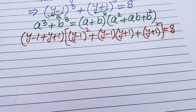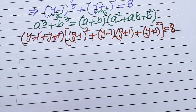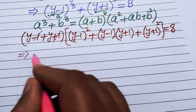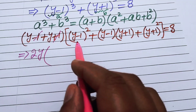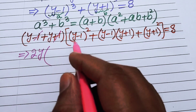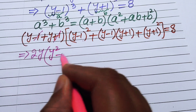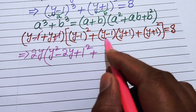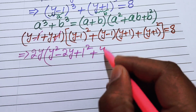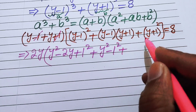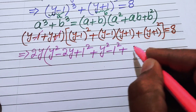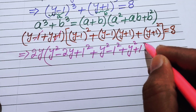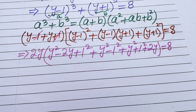Now we simplify. The (−1) and (+1) cancel in the first factor, giving 2y. We expand (y−1)² = y²−2y+1, the middle term (y−1)(y+1) = y²−1, and (y+1)² = y²+2y+1. The full equation becomes 2y · (y²−2y+1 + y²−1 + y²+2y+1) = 8.